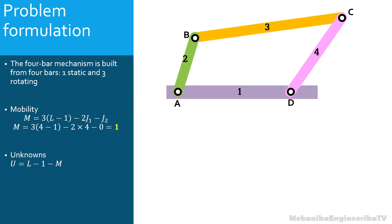The number of unknowns is equal to 4 minus 1 minus 1, which equals 2. Here there are 3 rotating bars, so 3 angles are required — one for each bar — to define the position of the mechanism. However, 1 angle should be considered as given since mobility is equal to 1. Thus, 2 angles are considered as the unknowns of the position problem. The position problem should be solved in order to determine the 2 unknown angles in terms of the given angle.